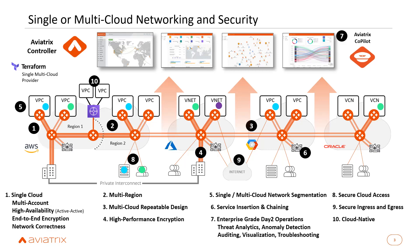Eighth is secure cloud access — if you want to apply RBAC or segmentation, that is also possible. Ninth is secure ingress and egress: we can deploy firewalls for east-west inspection or north-south inspection. If you want traffic to move towards the internet, that is also possible through the firewall. Tenth, if you still want to use cloud-native constructs like TGW, we can do TGW orchestration as well.